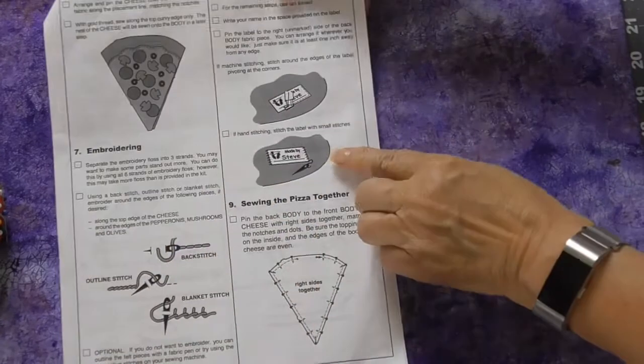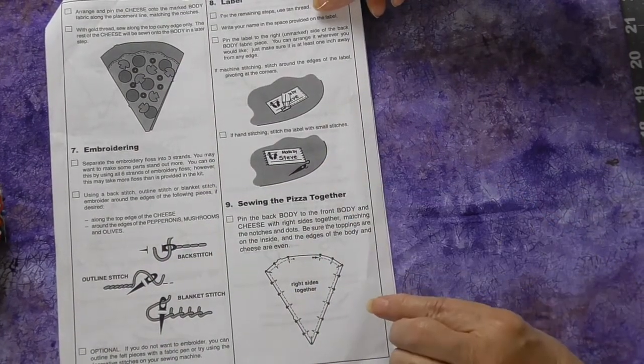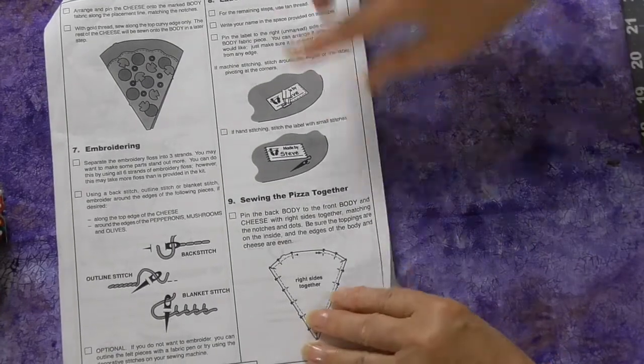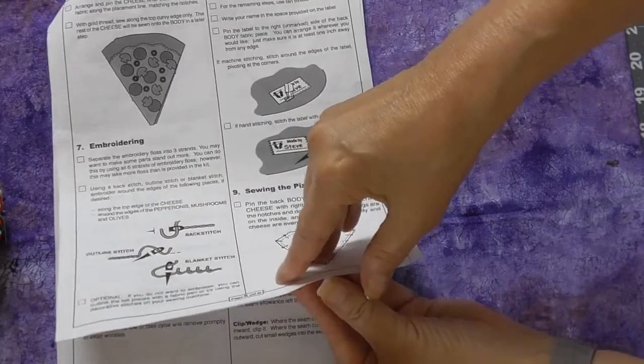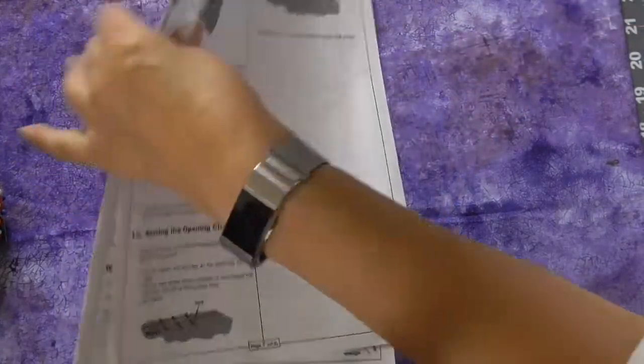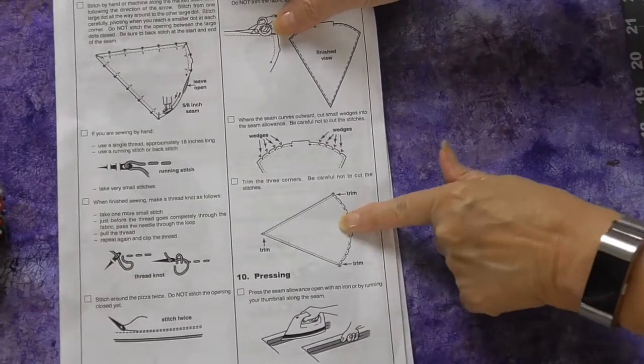There's a label that you can put on the back if you want but it's optional. Then you will put the front and the back together and stitch almost all the way around the outside edge. Don't completely stitch your project closed because you need some space to put the stuffing in.